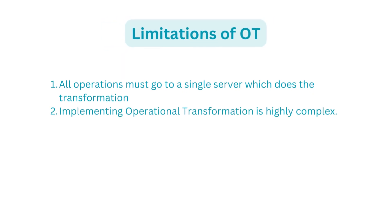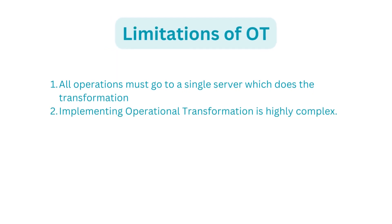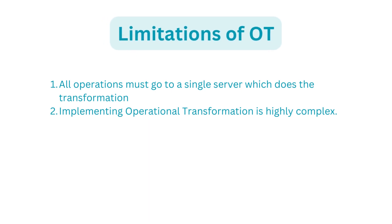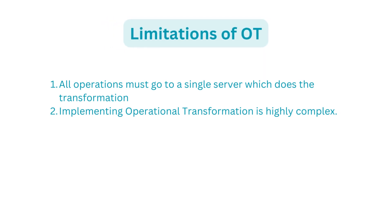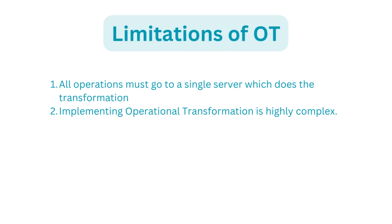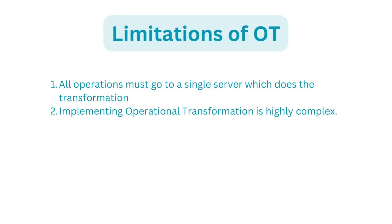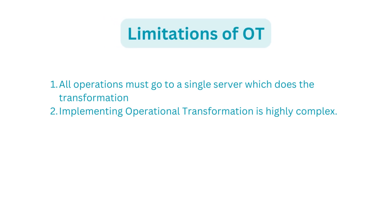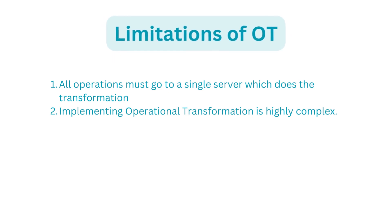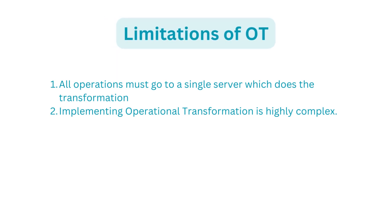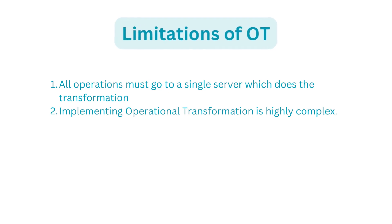While OT solves the problem, it has limitations. Number one: OT requires all operations to go through a single server for syncing changes across all users. This becomes a serious drawback in designing a highly distributed and scalable system — while Google Docs and MS Office have handled it well, it remains complicated for new systems. Number two: implementing the transformation functions in OT is very complex, not easy to maintain, and requires a lot of time and effort.